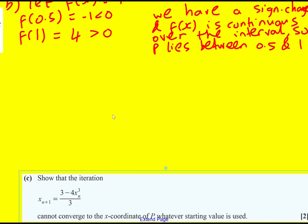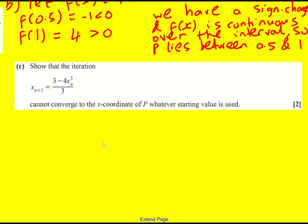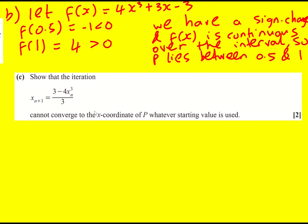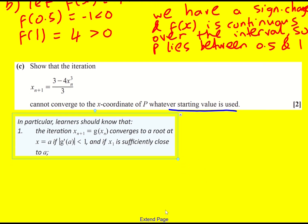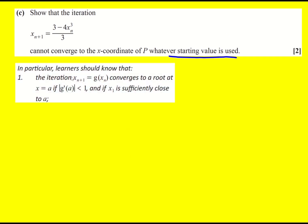Part (c) takes the equation and turns it into an iteration formula, fixed point iteration. However, we're asked to show that this iteration cannot converge to the x-coordinate of P, whatever starting value is used. What you have to use is this little thing on the specification. It says you must know that an iterative formula converges to a root at x equals a, if the modulus of the derivative of the function on the right is less than 1, and if x1 is sufficiently close to a.